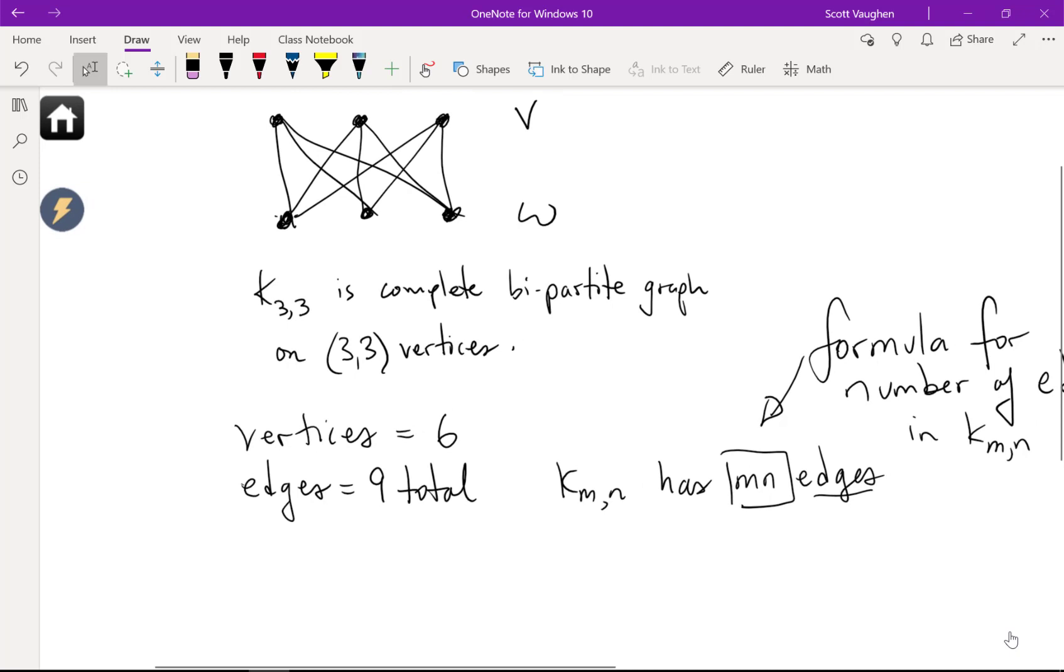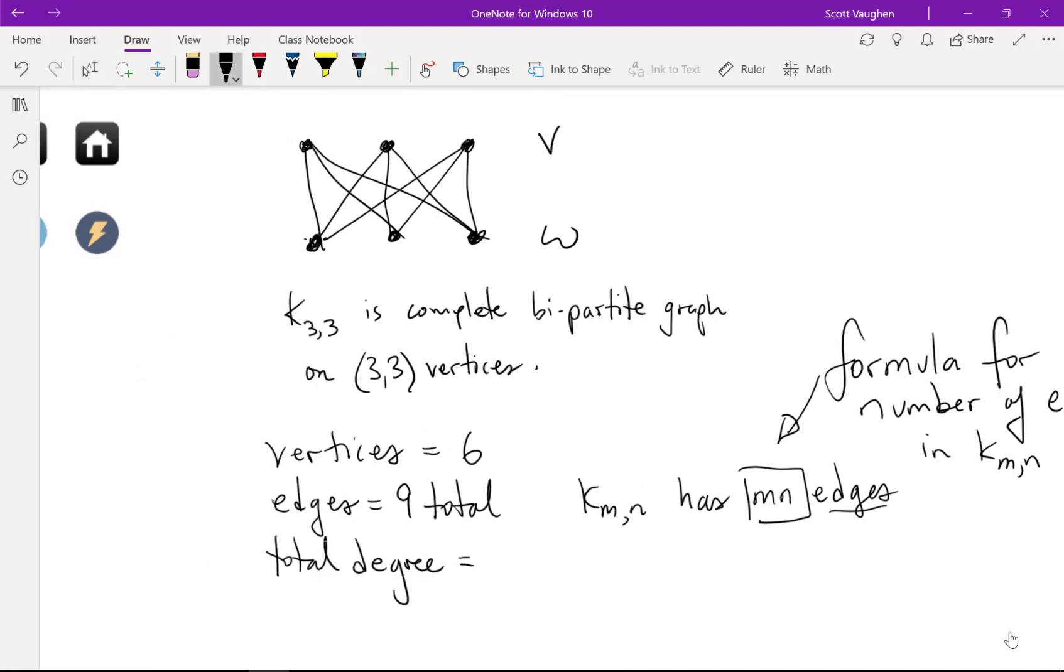Another thing that we could compute here is the total degree. It's always two times the number of edges, which is two times nine in this case. So, there's 18 is the sum, which always is going to be an even number, because you're always multiplying the number of edges. Every edge has two endpoints, and so double that for the total degree. And, of course, we could also recognize that it had to be 18, because there are six vertices. Each of them has degree three. And six times three, that gives me 18 also.